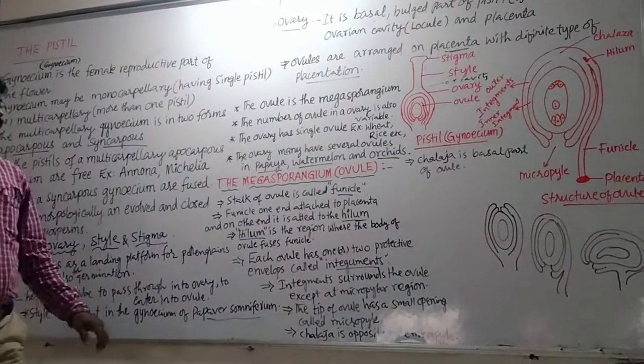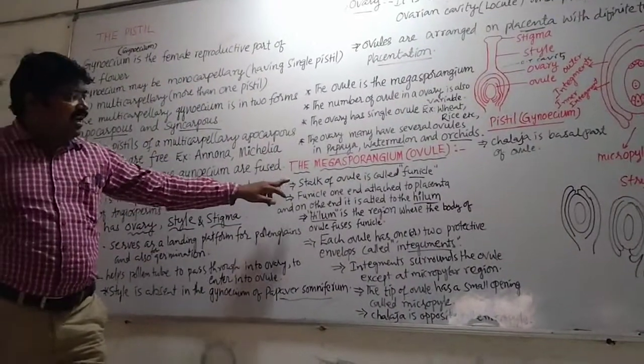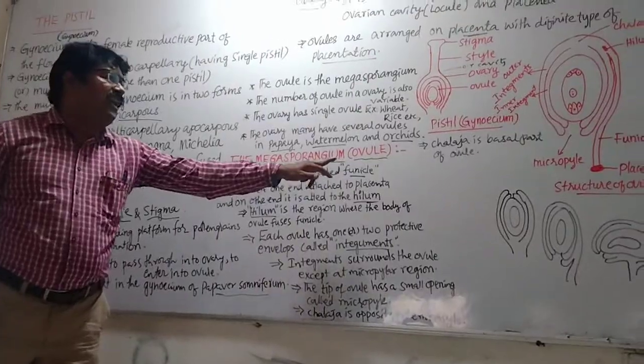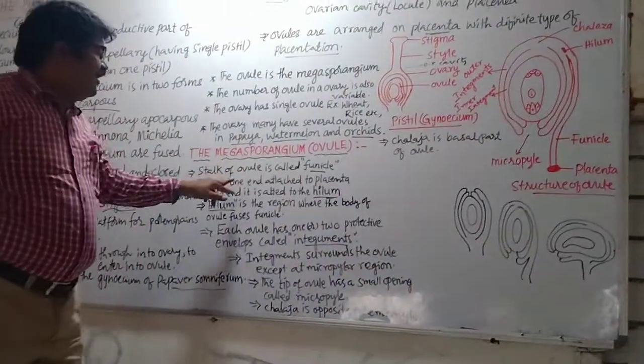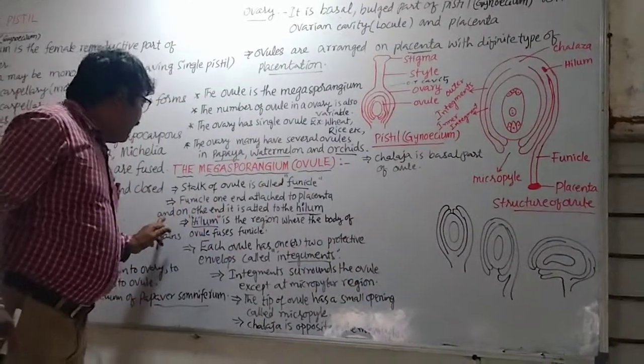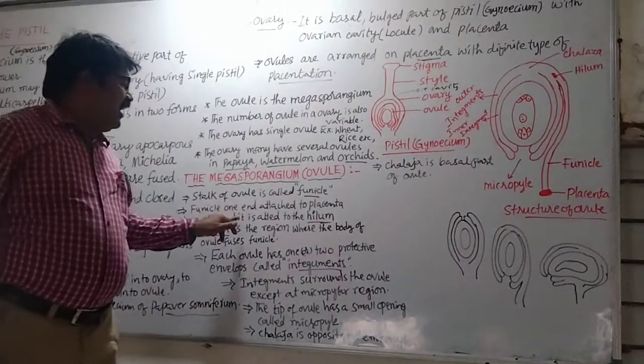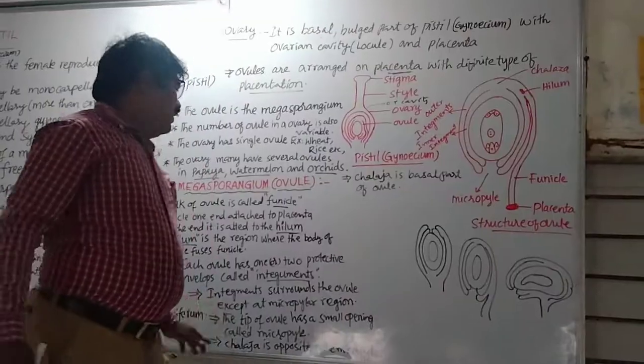The structure of the ovule, the megasporangium, has a structure called the funicle. The funicle, one end is attached to the placenta, and another end is attached to the hilum. The hilum is where the body of the ovule uses the funicle.